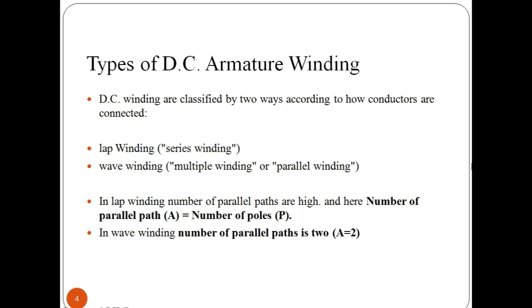Therefore, this winding is also called as multiple winding or parallel winding. In wave winding, number of parallel paths is 2. That's why it is called as series winding.